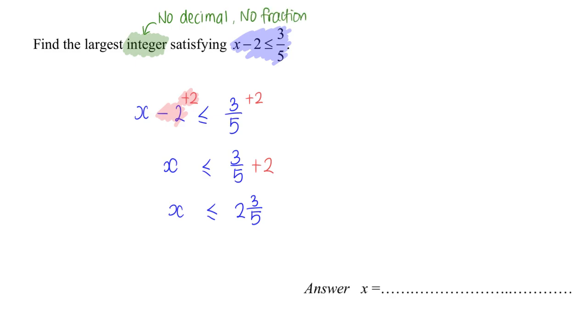Therefore, if I were to draw a number line out, for example in this case, I will have my 2 and 3, and somewhere in between, 2 and 3 over 5 will be somewhere here.